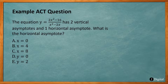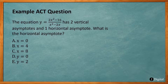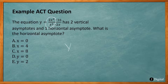Another ACT question: For y = (2x² - 16) / (x² - 2x), which has two vertical asymptotes and one horizontal asymptote — what is the horizontal asymptote? The degrees on the numerator and denominator are the same, so it's the ratio of the coefficients: 2 over 1. So y = 2 — answer E.